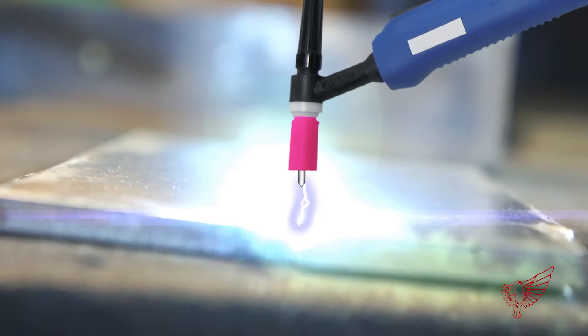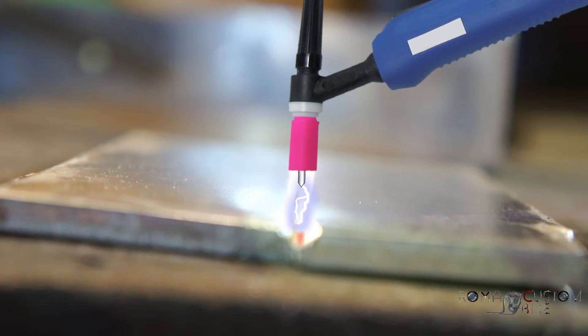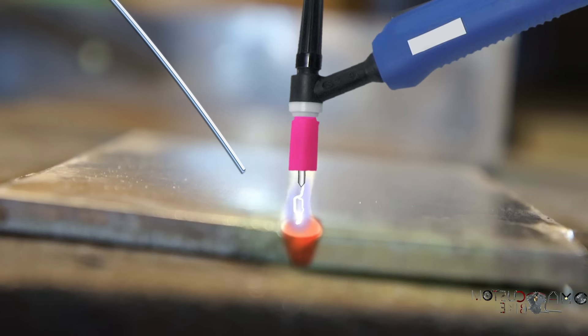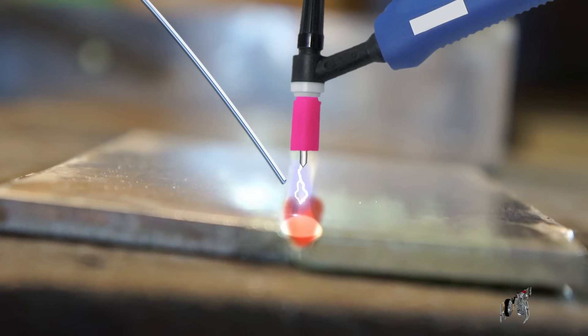Once you have created a little pool of melted metal we can start adding the metal filler to fill up the space between the two parts and strengthen the joint.